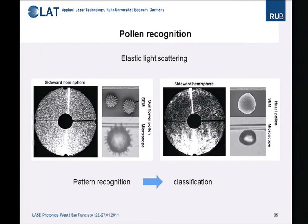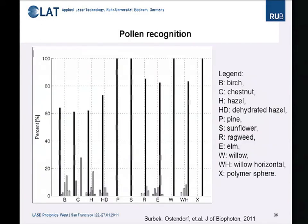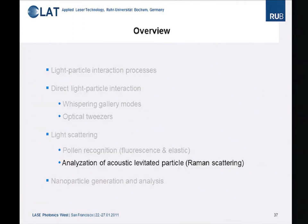The elastic light scattering images for different types of pollen look quite different — you can also see the differences in SEM images. We used pattern recognition software to classify pollen, demonstrated with many different types: birch, chestnut, hazel, and so on. For some kinds of pollen, elastic light scattering achieves recognition rates up to 100%, while other types of pollen can be recognized at over 60%, which is still quite a high ratio.